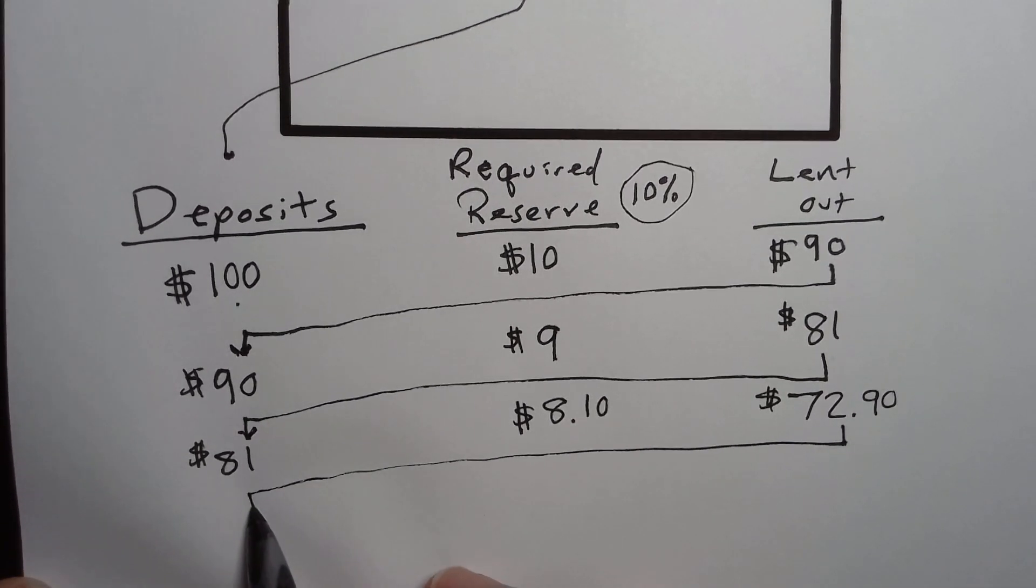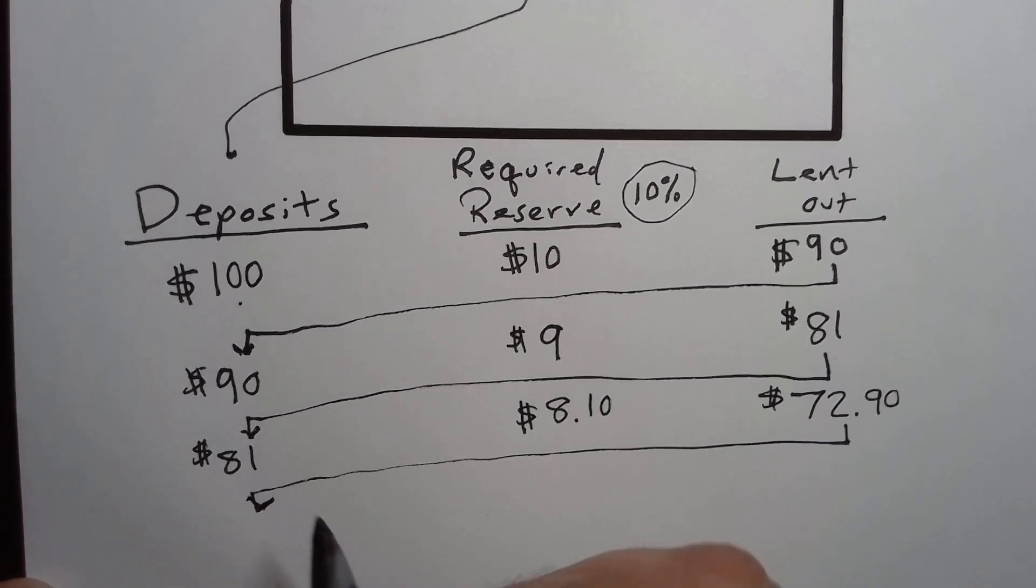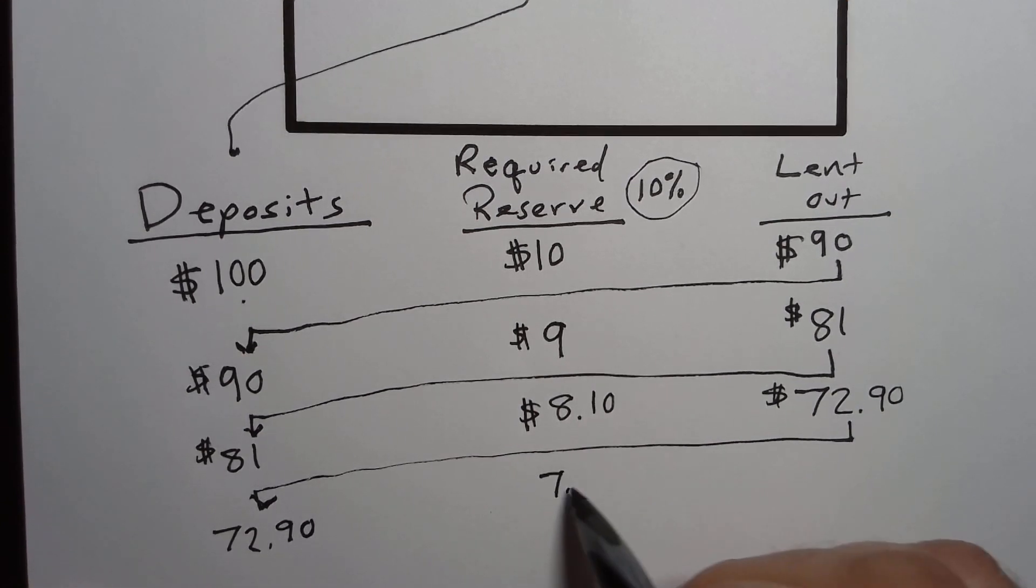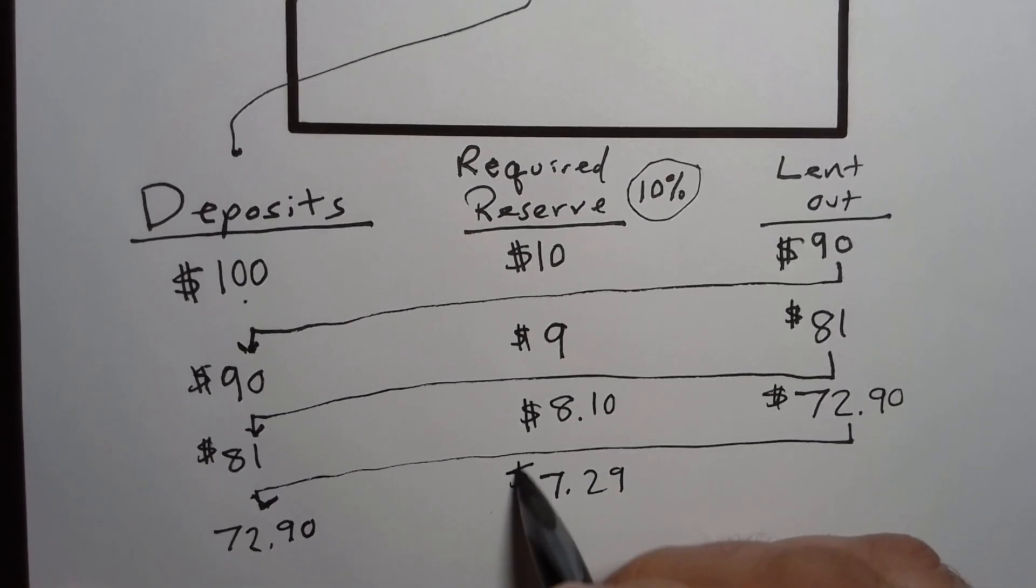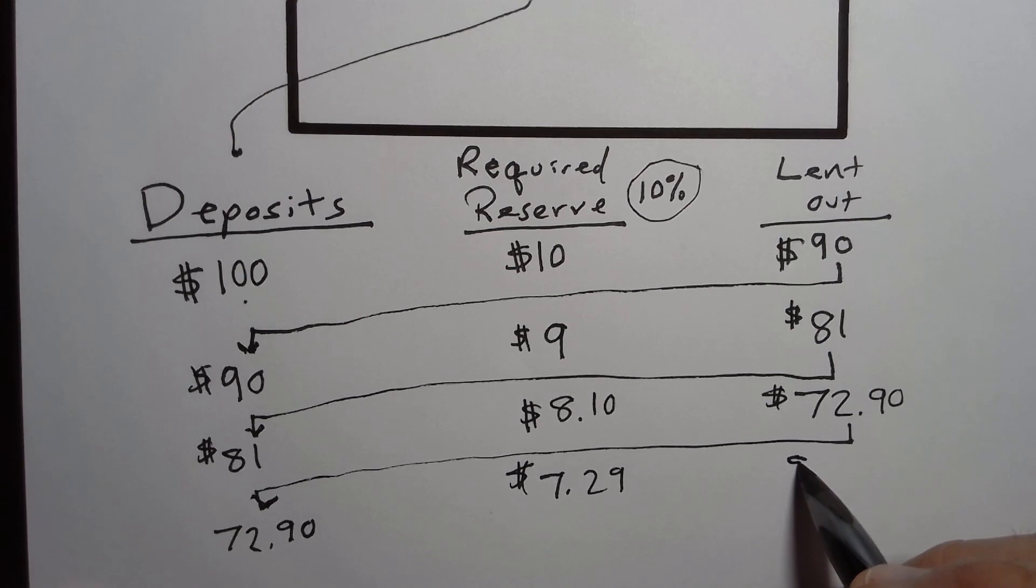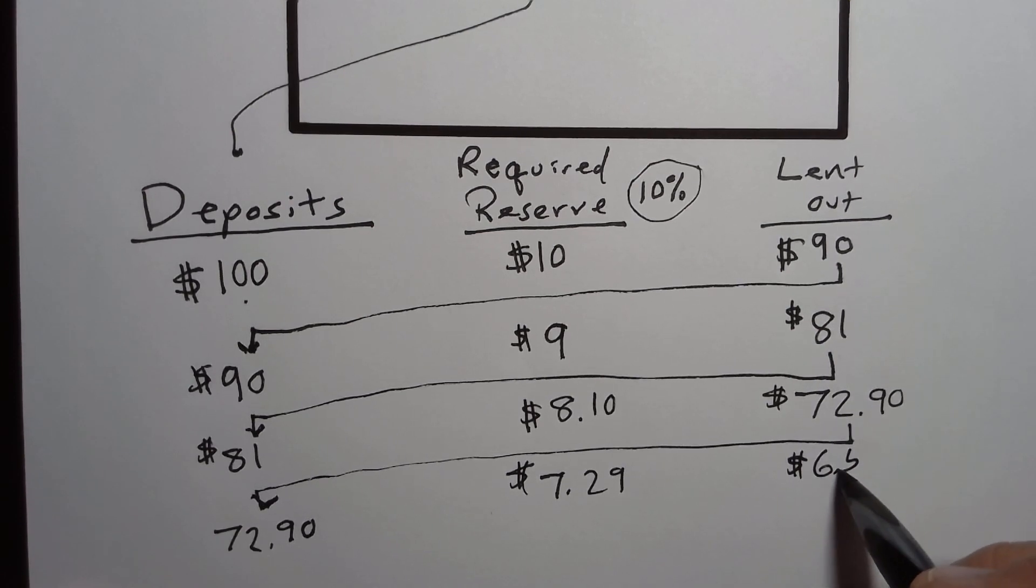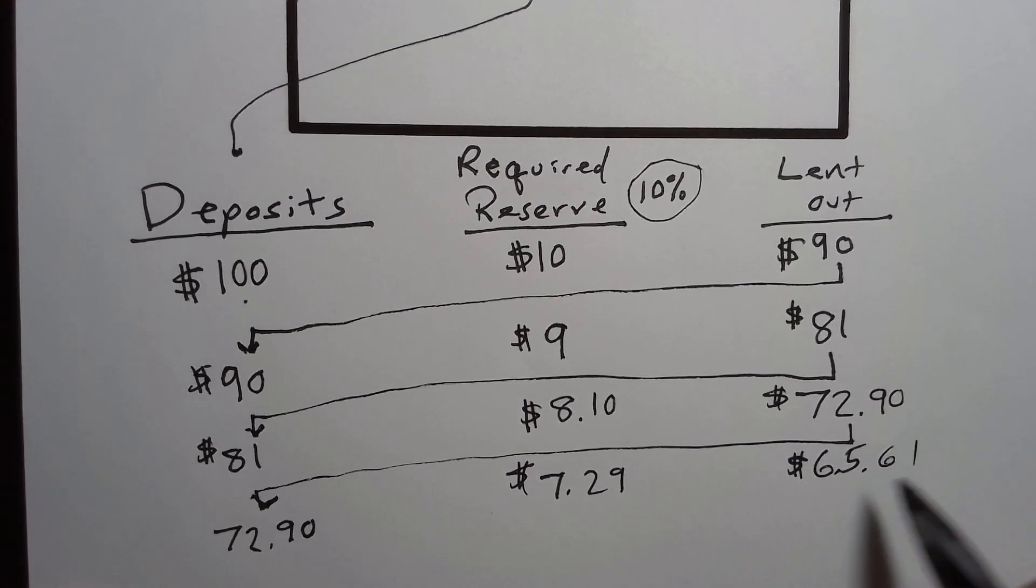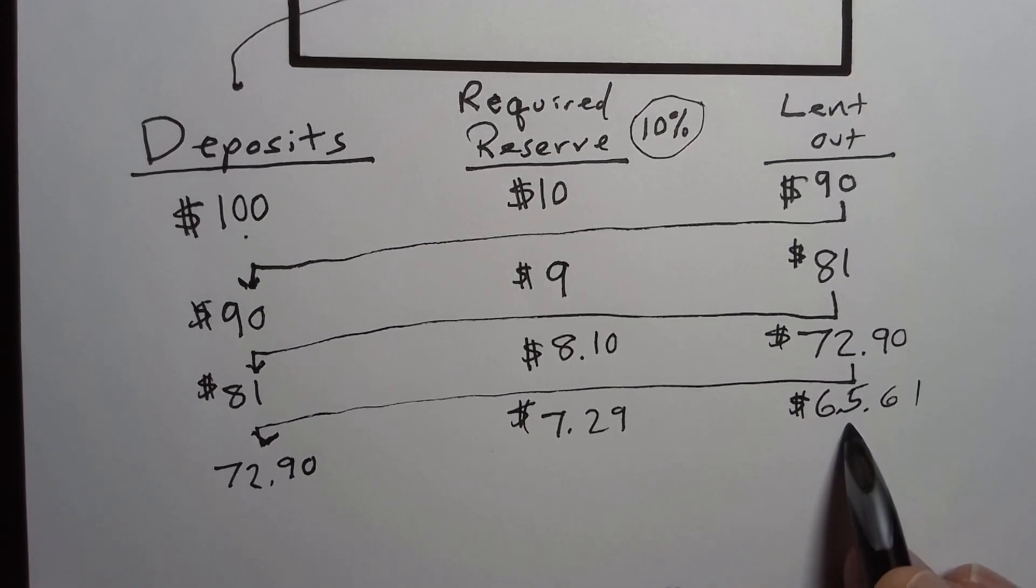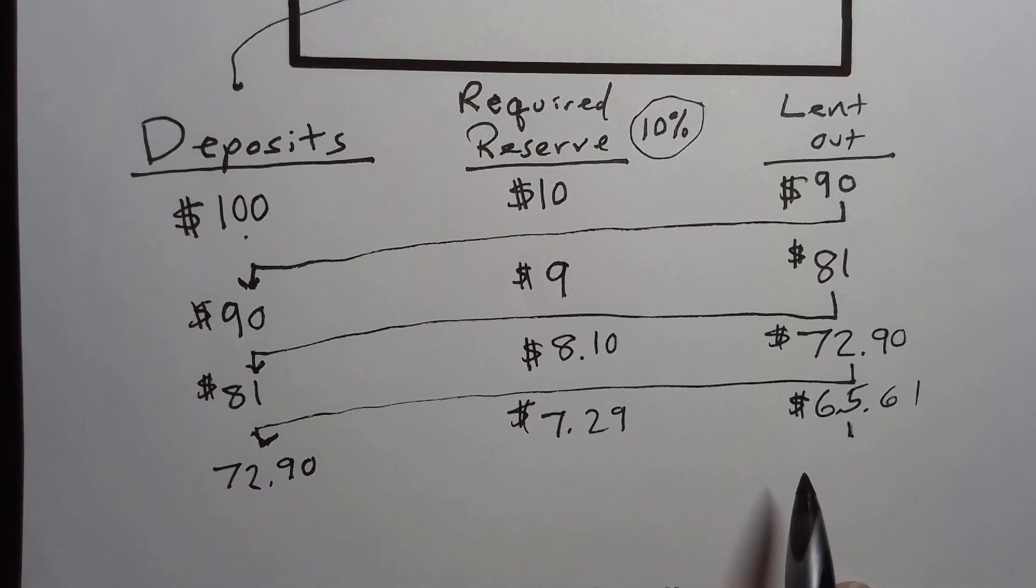And this process repeats itself on and on. That means that $72.90 gets deposited here, of that $7.29 is kept on reserve and $65.61 is lent out. So as you can see, this process can go on and on and on, and it's like an infinite money machine.